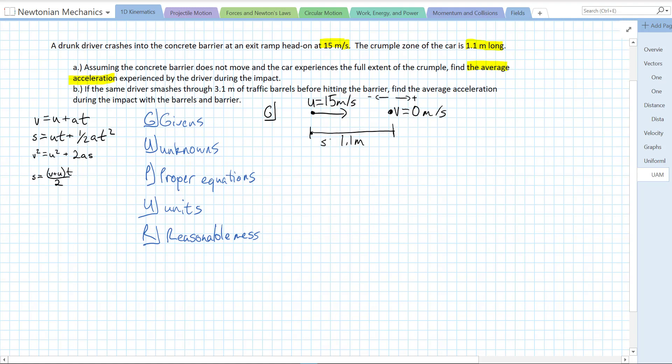So we know that our final velocity is equal to 0 meters per second. So our displacement is equal to 1.1 meters. Our final velocity is 0 and U is 15 meters per second. We could write that out explicitly as U equals positive 15 meters per second, V equals 0, S equals positive 1.1 meters because it is displaced forward in the forward direction.